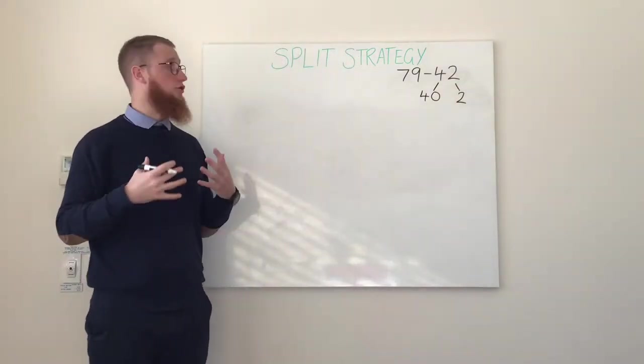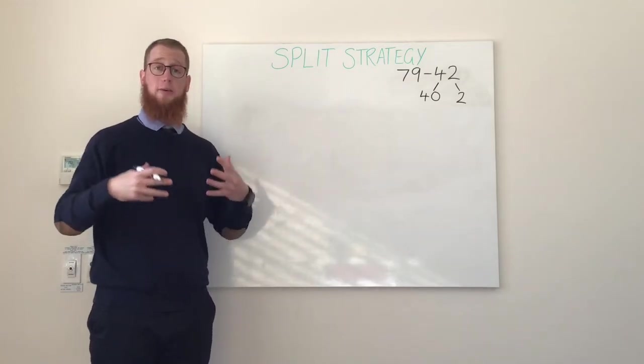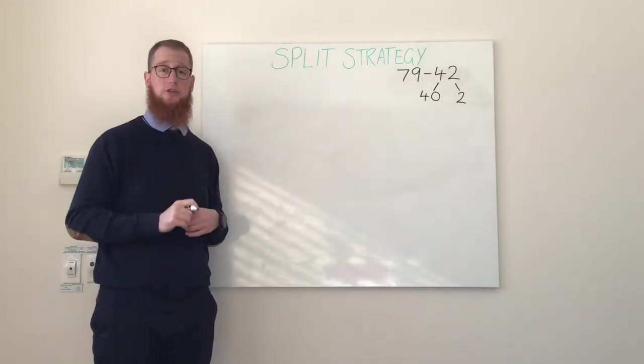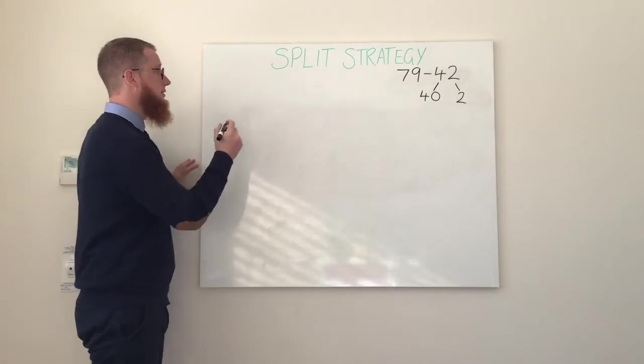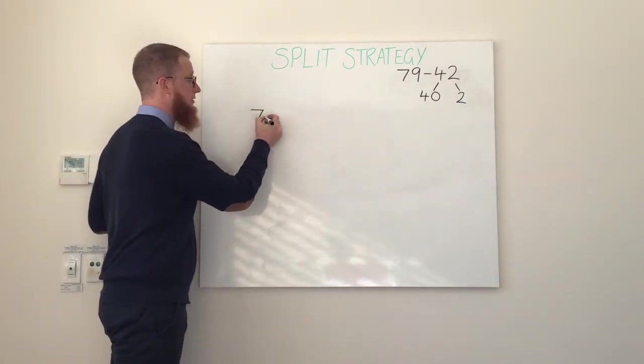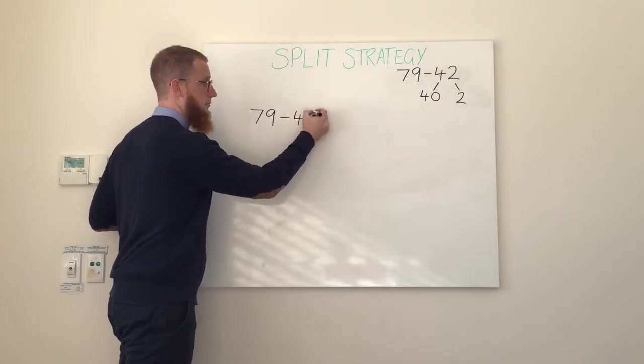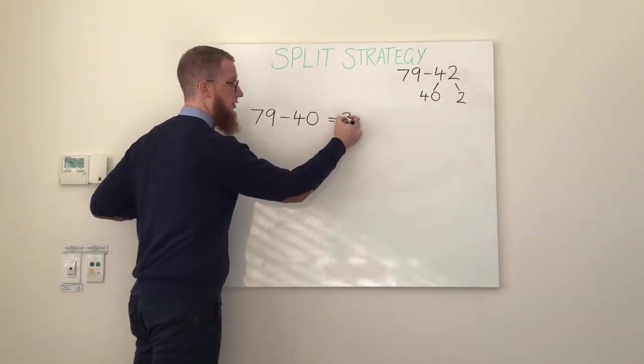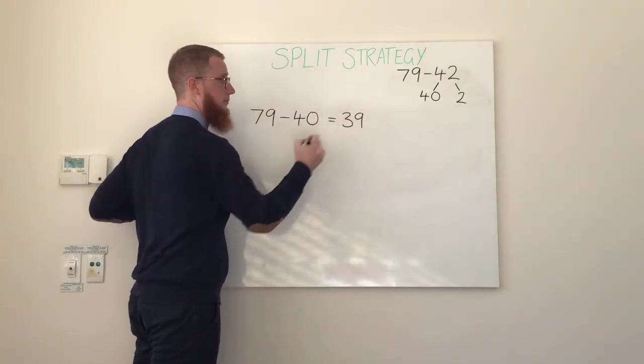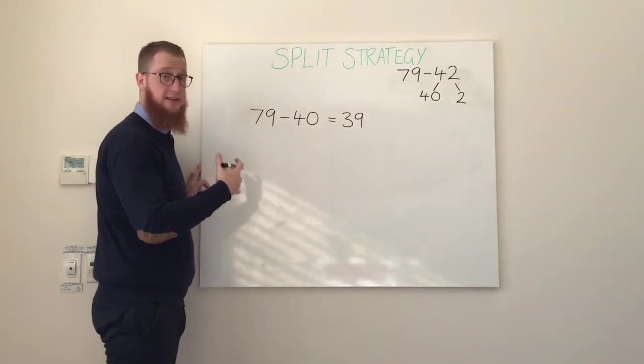Therefore to solve 79 minus 42 we need to firstly take away 40 and then take away 2. Two different steps. Step number 1: 79 minus 40 leaves us with 39. We've now taken away our 4 lots of 10, our 40.